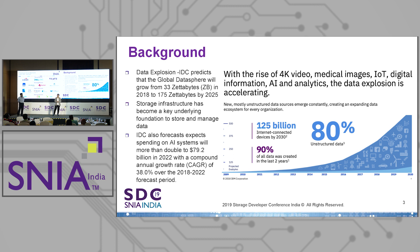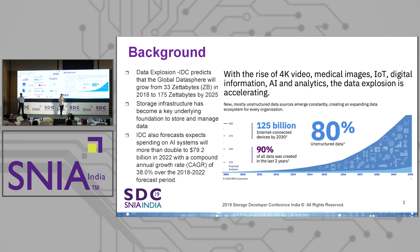A quick background. The global data sphere is growing and never-ending. Data is primarily created at three locations: your core data centers and cloud data centers, edge sites, and customer endpoints like PCs, smartphones, and IoT devices. This data is growing and humongous. IDC has forecast that it's going from 33 zettabytes in 2018 to 175 zettabytes in 2025.